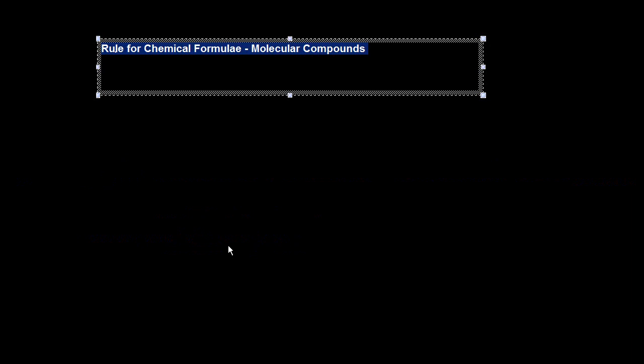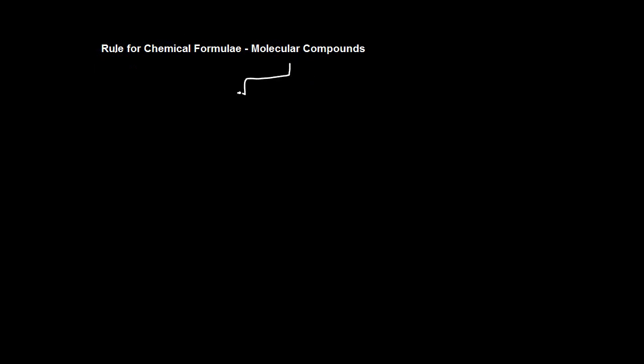Let's look at the rules for chemical formulas of molecular compounds. When you write the chemical formula of a molecular compound, each molecular compound will basically comprise of two non-metals — non-metal one and non-metal two.